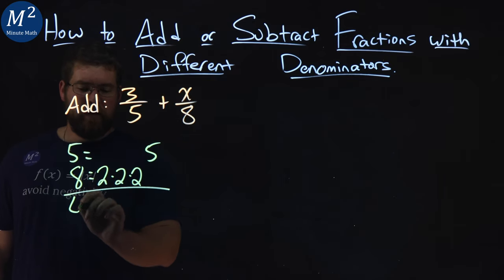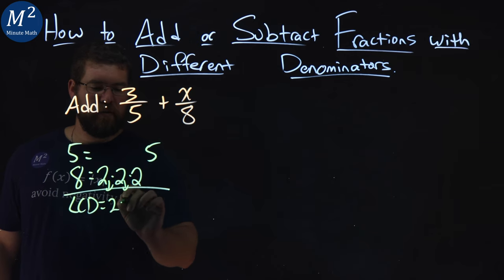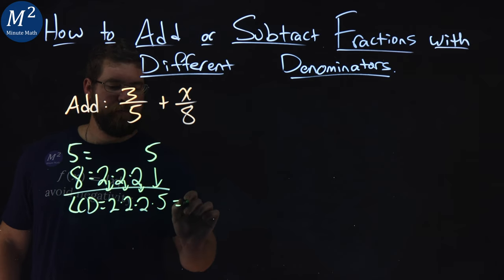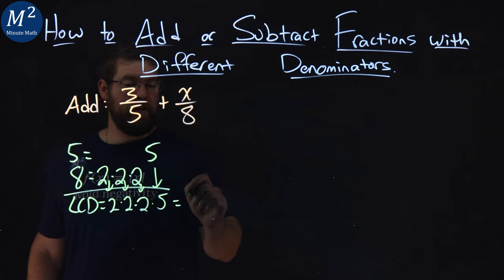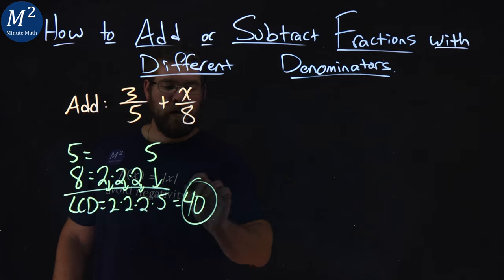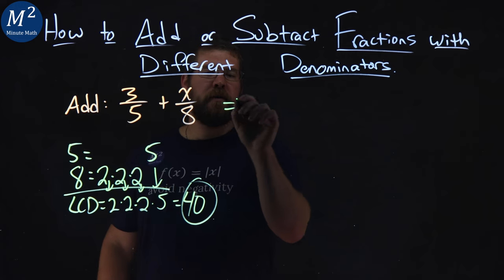Well, line up here, LCD, let's line up our numbers. Two comes down here, two comes down here, two comes down here, and then bring down the five. Two times two times two is an eight, times five is a 40. And so the least common denominator of our two fractions here is a 40.